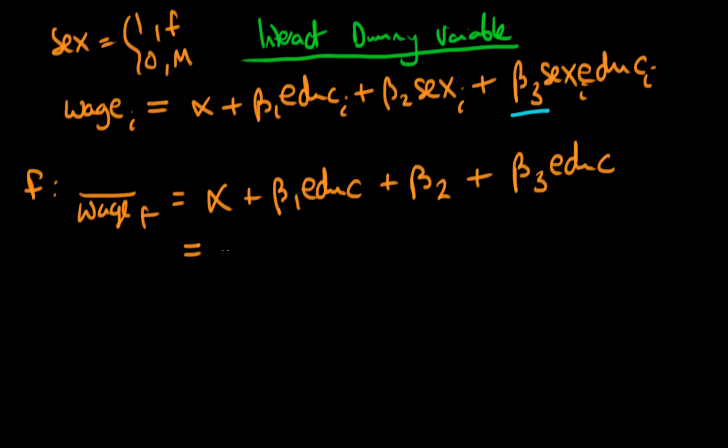And then we can simplify this if we notice that our alpha and our beta two are both constants here, so writing those both at the start of the model we get alpha plus beta two. And then we recognize that we've essentially got two education terms, so I can simplify these by combining them: I just get beta one plus beta three times the number of years of education.